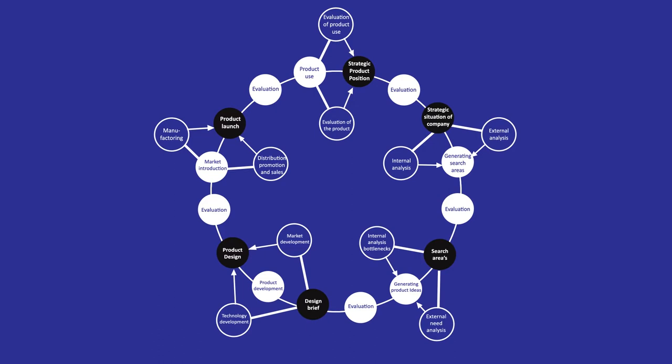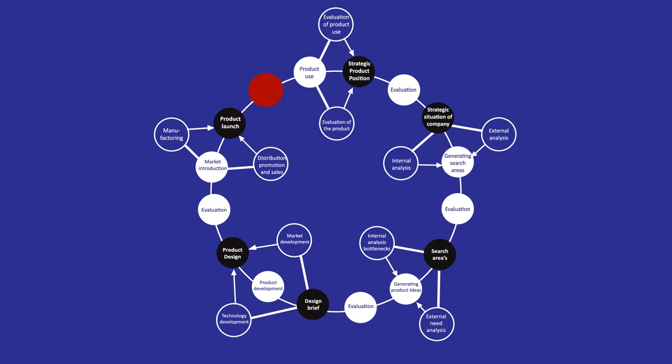The Delft innovation model is a circular model that consists of five stages. The end of stage one is the beginning of stage two. The end of stage two is the beginning of stage three, and so on. At the end of stage five is the beginning of the next stage one, because then we have closed the innovation loop.